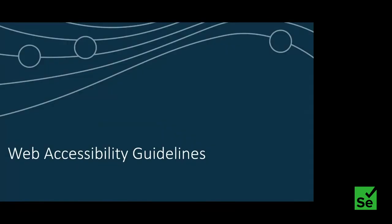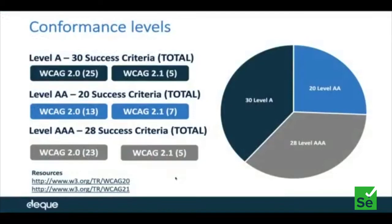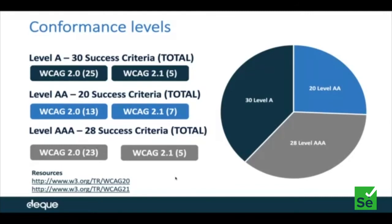Coming to the guidelines and standards, every country will have its own laws, but internationally there is a standard called WCAG — Web Content Accessibility Guidelines. The W3C's current recommendation is WCAG 2.1 Level AA, which comprises 50 success criteria. Whenever you have to make your application accessible and compliant with this standard, you have to cross-check all 50 success criteria, which are essentially test procedures. At Deque, we recommend WCAG 2.1 Level AA for all our clients. Level AAA is a little difficult to achieve, which is why Level AA is the reasonable accommodation recommended.